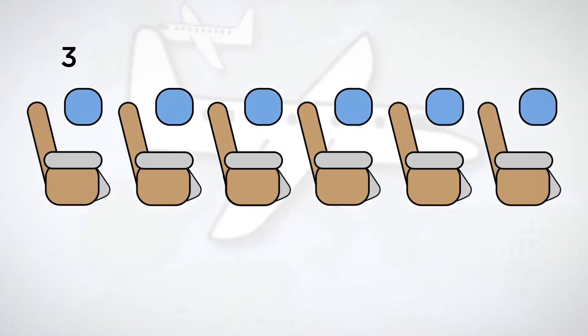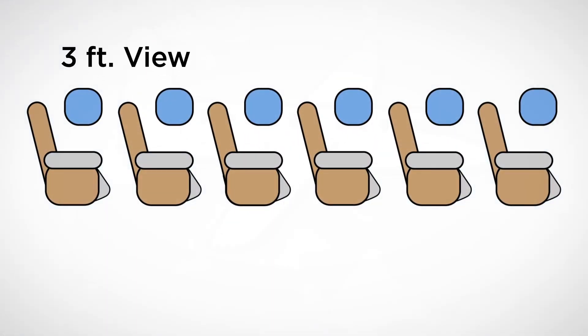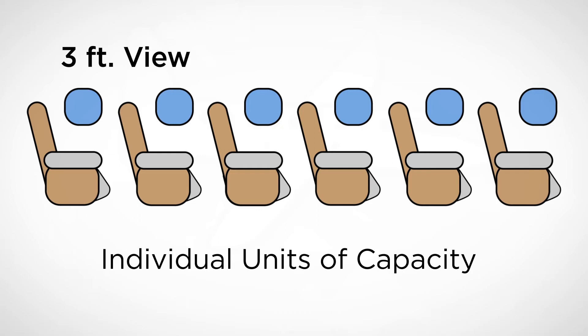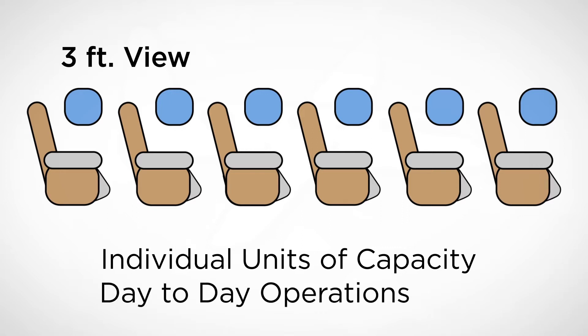However, in order to be profitable in the long run, matching supply and demand involves going into a three-feet view of the airline industry. You cannot just stay at the high-level strategic side of the problem. You need to look at each individual seat in your operation and make sure you manage that individual unit of capacity in a profitable way — on a day-by-day or a flight-by-flight basis.